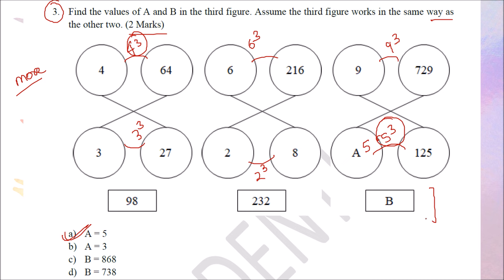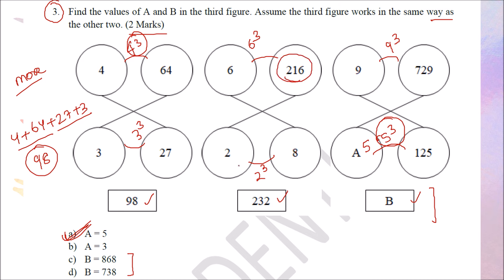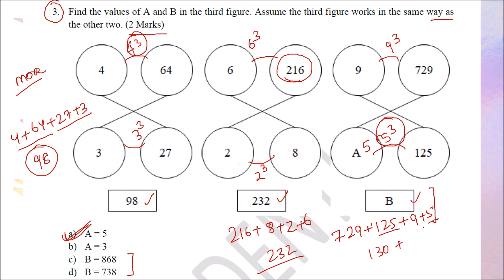Now we need to find B. Looking at the other figures: add all values — 4 plus 64 plus 27 plus 3 gives 98 (close to the given 97, checking: 30 plus 68 is 98). Then 216 plus 8 plus 2 plus 6 gives 232, which matches. For the third figure: 729 plus 125 plus 9 plus 5 — that is 130 plus 738 — giving 868. So option C gives the value of B, and the answer is A and C.